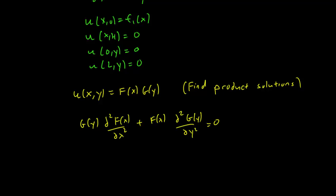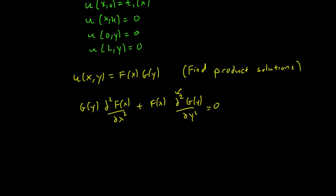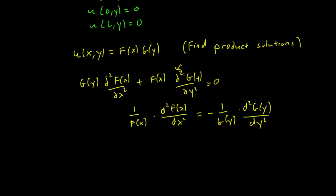And we can move this term to the right-hand side, and shifting all the x terms to the left and the y terms to the right, we then obtain 1 over f(x) times the second derivative of f equals minus 1 over g(y) times the second derivative of g. So again, because the left-hand side is just a function of x, and the right-hand side is just a function of y, they must in fact both be constant.